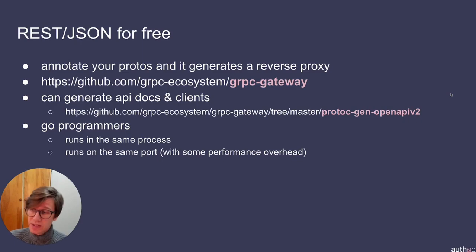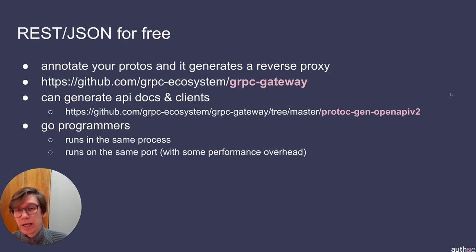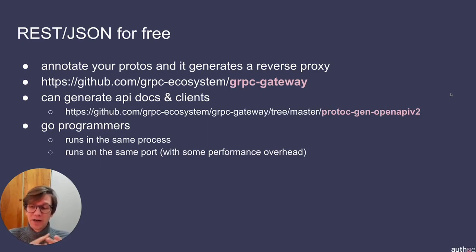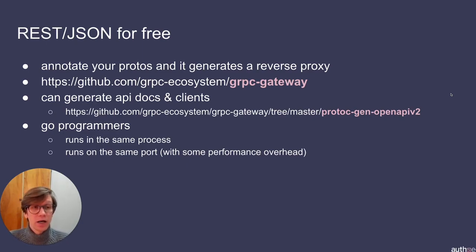This means you can support legacy clients and environments that cannot use gRPC — like embedded systems with memory restrictions — without writing extra code; you just generate it. What's super cool is not only can you generate that proxy code, you can also generate documentation for the HTTP API using OpenAPI (formerly Swagger), and use that same generation to generate HTTP clients. So you can write a single gRPC service definition and generate gRPC service code, HTTP service code, and documentation for both — incredibly powerful for supporting multiple protocols.